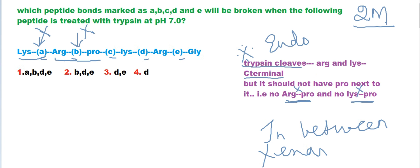Yes, this peptide bond will be cleaved by trypsin — bond B — because it is not followed by proline, it is present in the endo region, in between the sequence, and it does not produce any monomer.